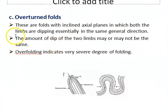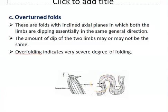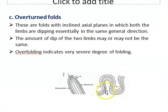Overturned folds are folds with an inclined axial plane in which both limbs dip essentially in the same general direction. While one limb is in a normal position, the other limb is overturned, as shown in the diagram. Therefore they are known as overturned folds. Overturning indicates a severe degree of folding.